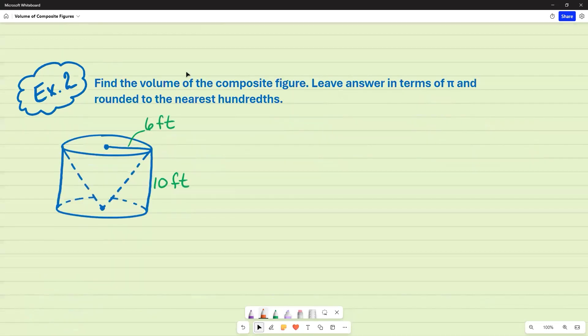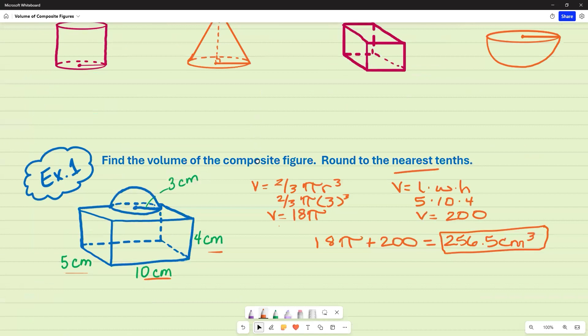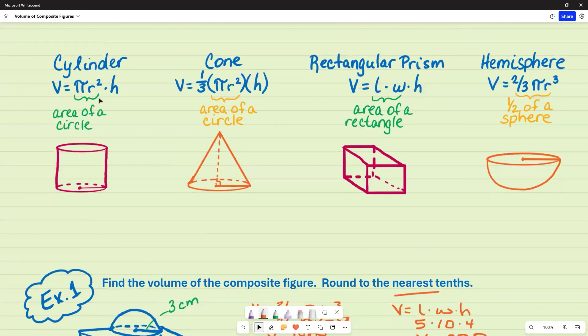For example two, we are asked to find the volume of a composite figure, leave the answer in terms of pi, and round it to the nearest hundredths. So now this one is a little bit different. I see a shape within a shape. So I see a cone that's inside of a cylinder. So my formulas that I'm going to use will be these two formulas here.